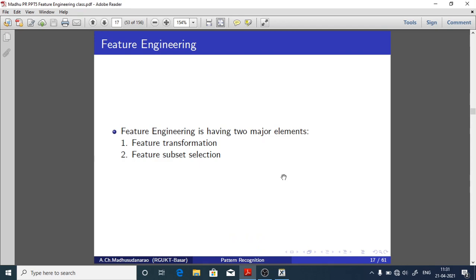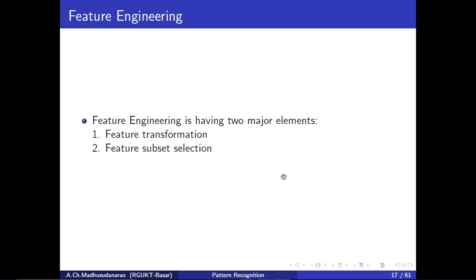Good morning. Today we are going to discuss briefly about feature transformation. Feature engineering has two major elements: number one, feature transformation, and number two, feature subset selection.